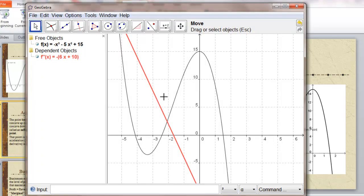Where's that zero? Where does it intersect the x-axis? At negative 1.67.